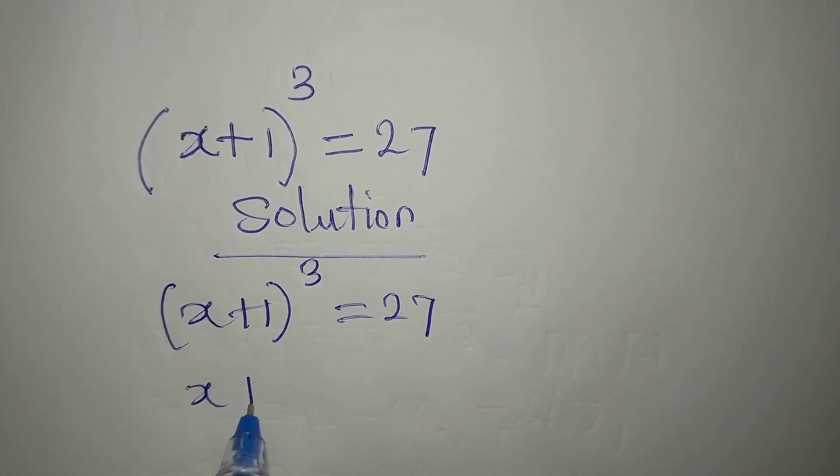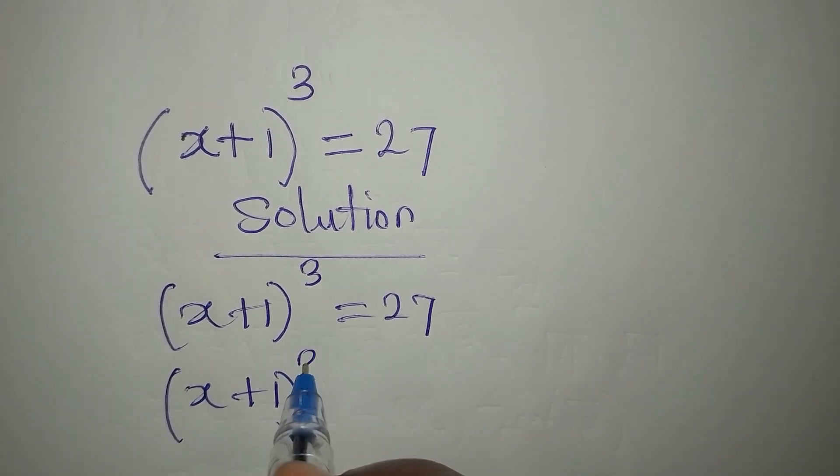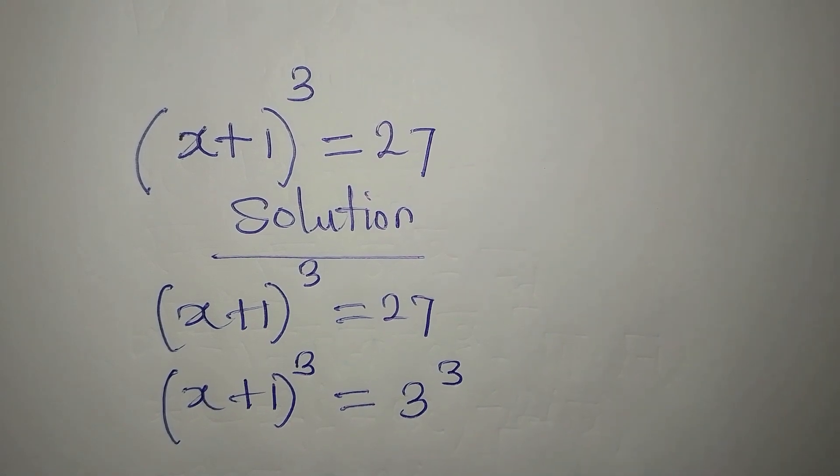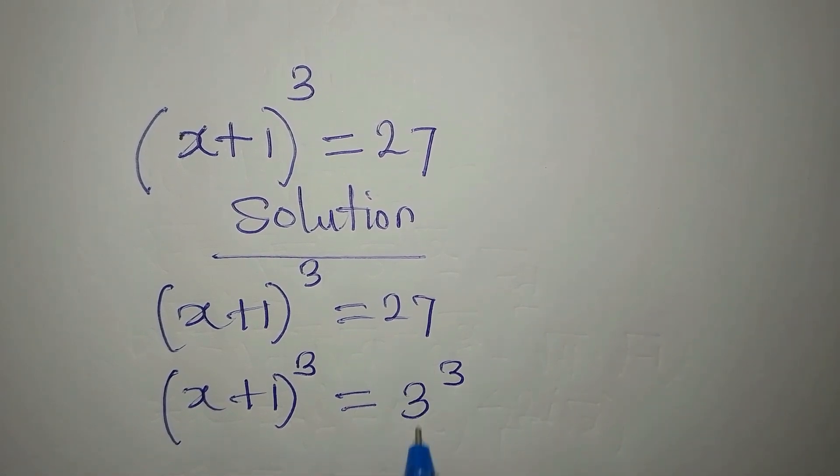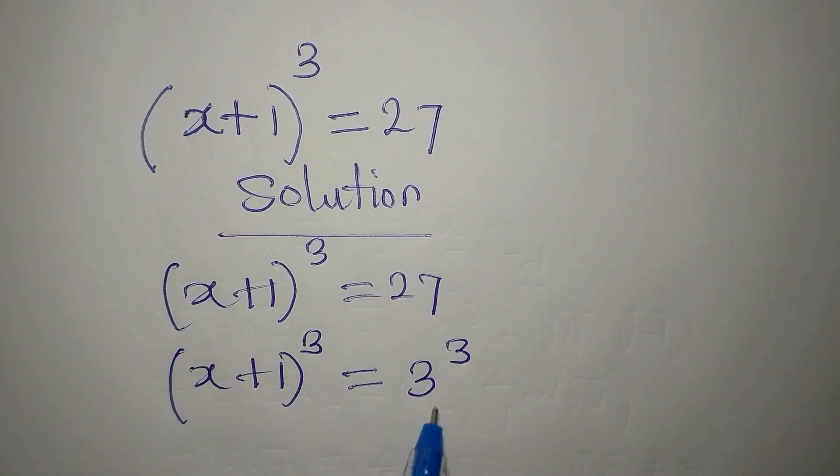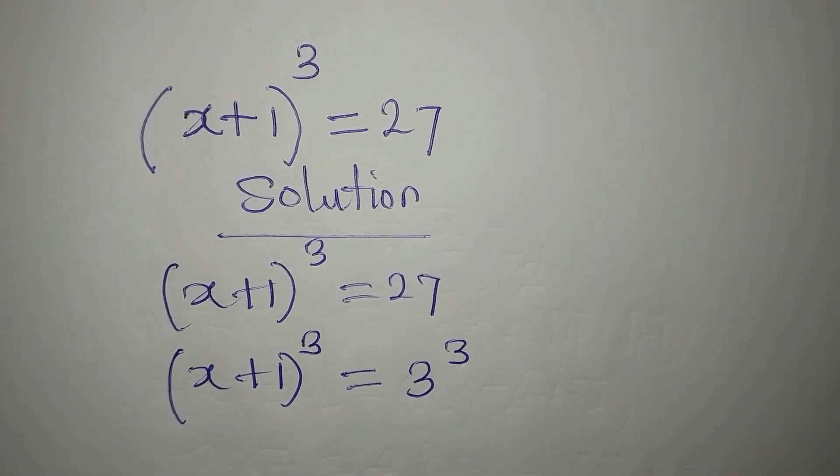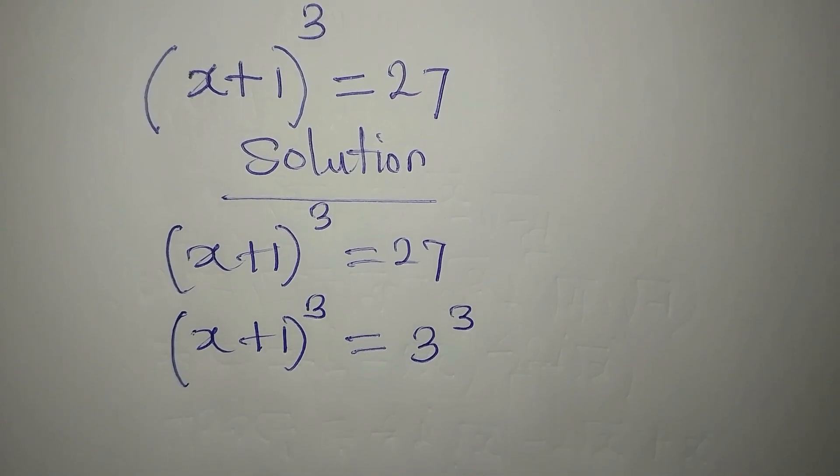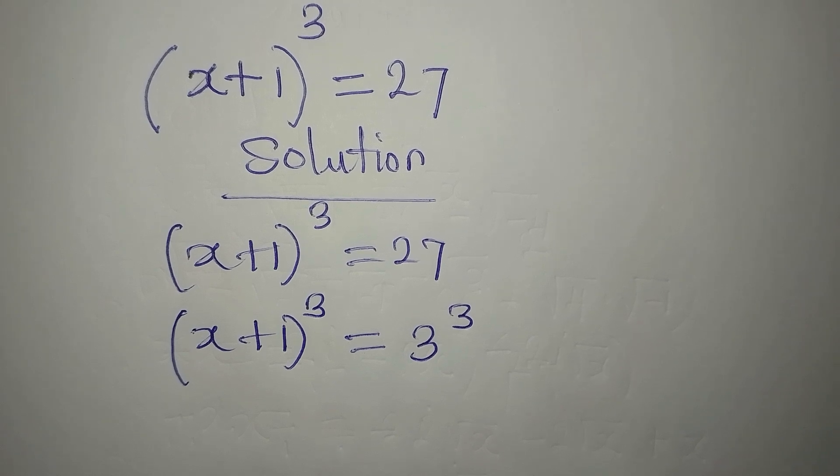So we have x plus 1 to the power of 3 equals 3 to the power of 3. This is because 27 is the same thing as 3 to the power of 3. If we equate the bases because the powers are the same, we'll have just one solution and we need more than one solution for this.